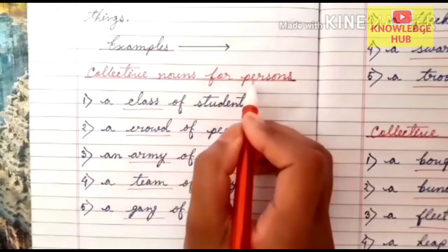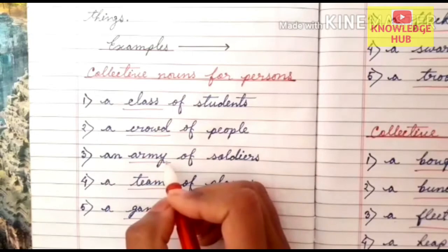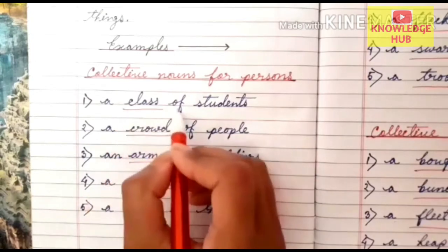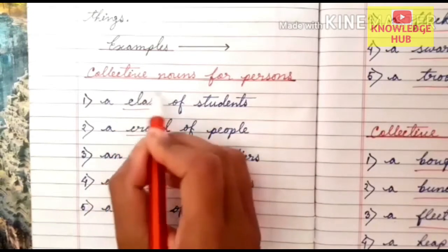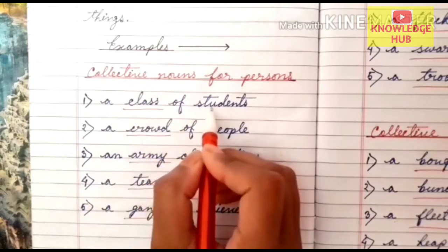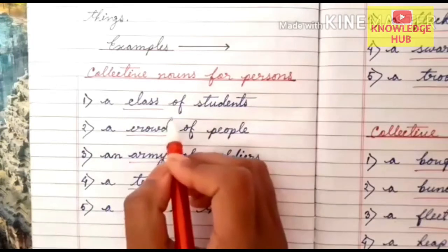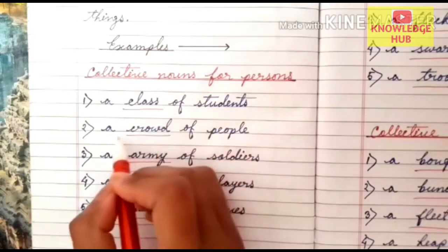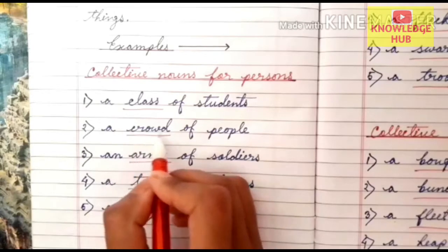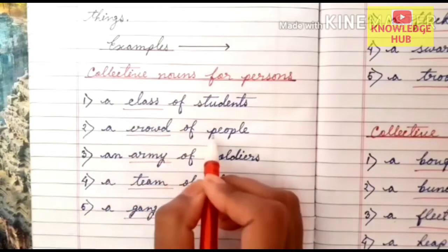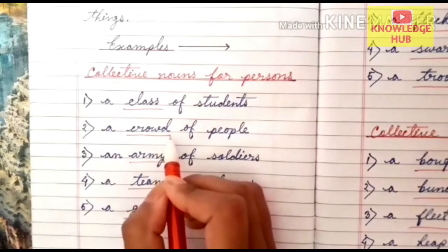Collective nouns for persons. So these are the examples of collective nouns for persons. A class of students — here the word 'class' refers to the group of students. A crowd of people — here the word 'crowd' refers to the group of people.